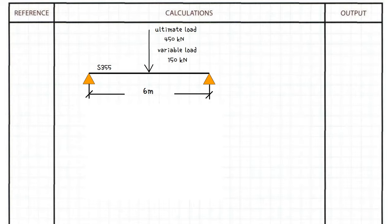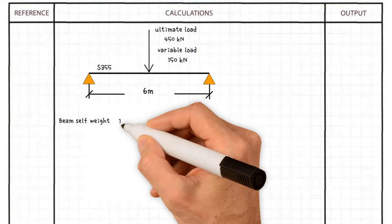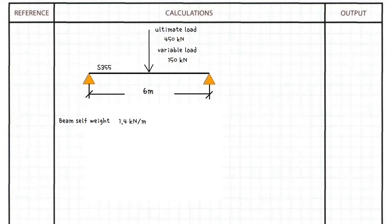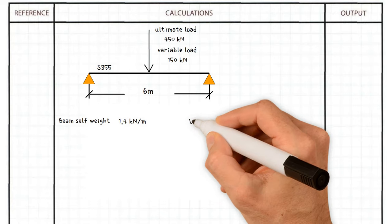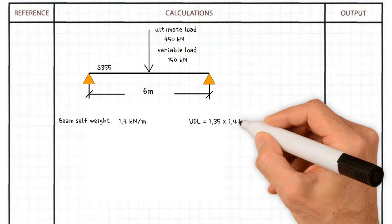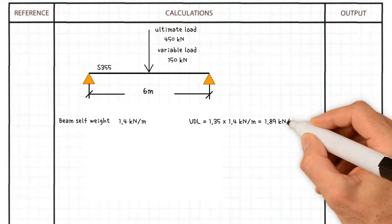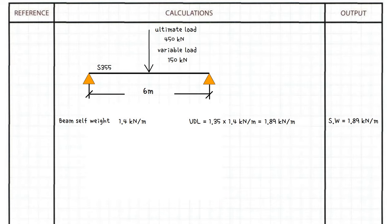First, we need to work out our applied forces. Let's assume beam self-weight is 1.4 kilonewtons per meter. Therefore, ultimate distributed load equals 1.35 times 1.4 kilonewtons per meter, giving us a value of 1.89 kilonewtons per meter.